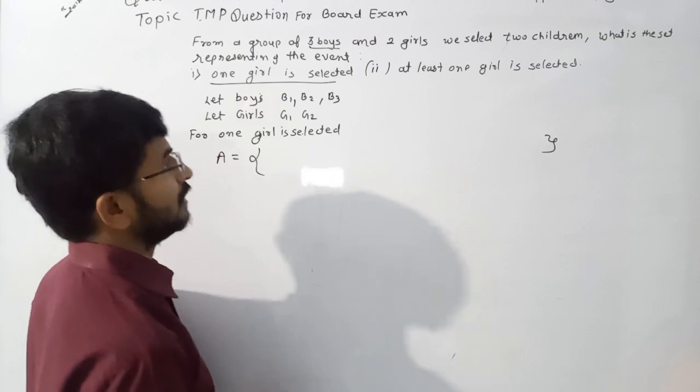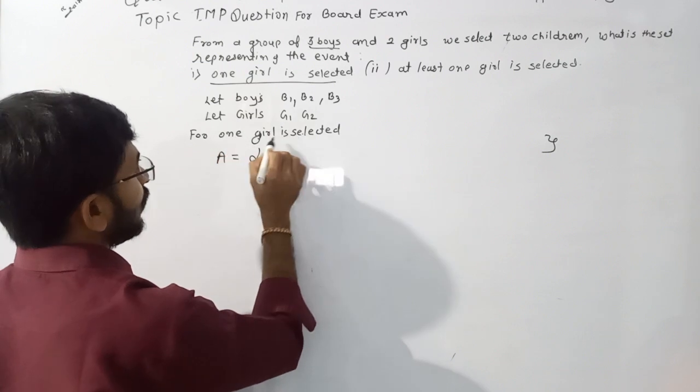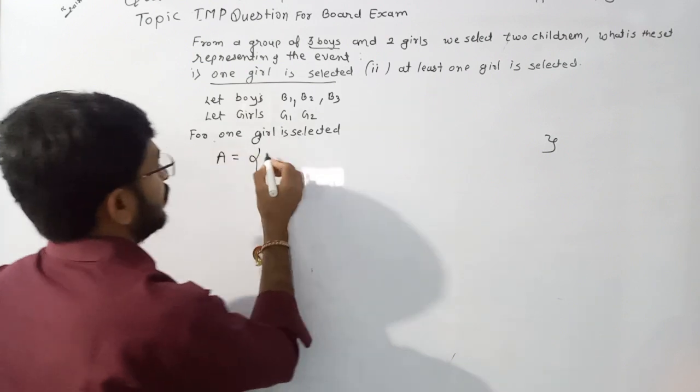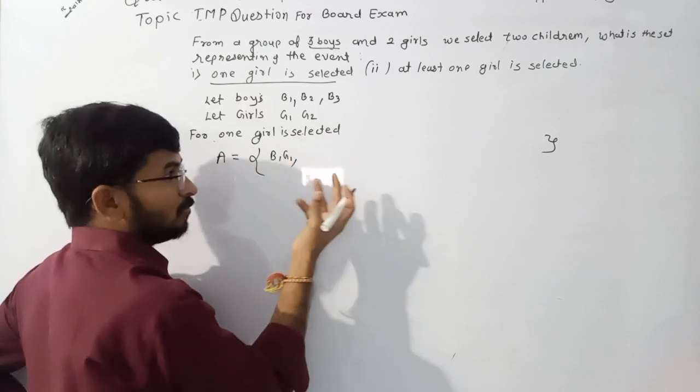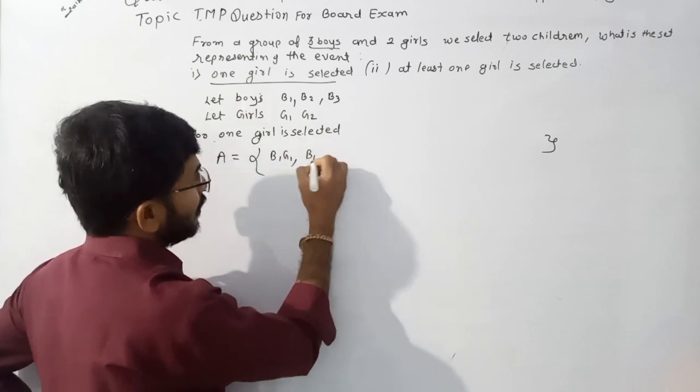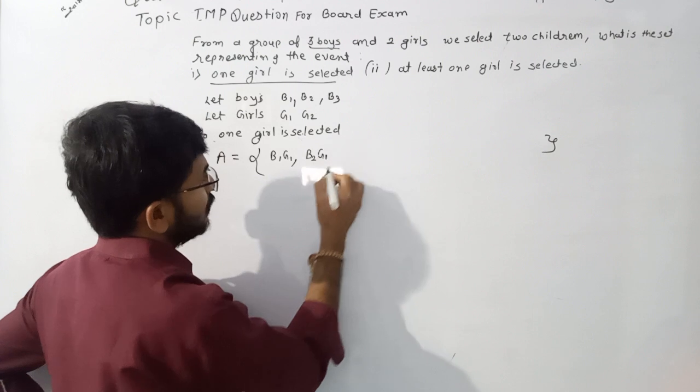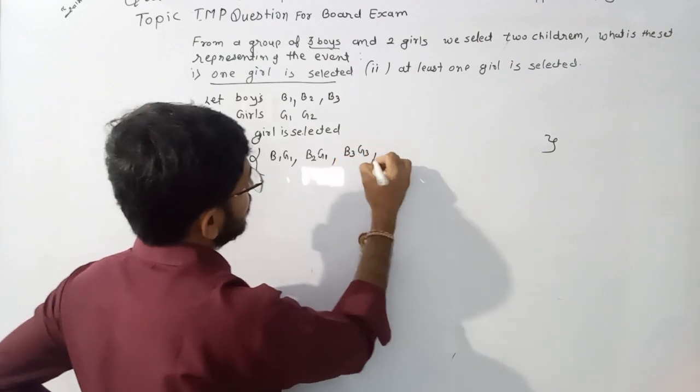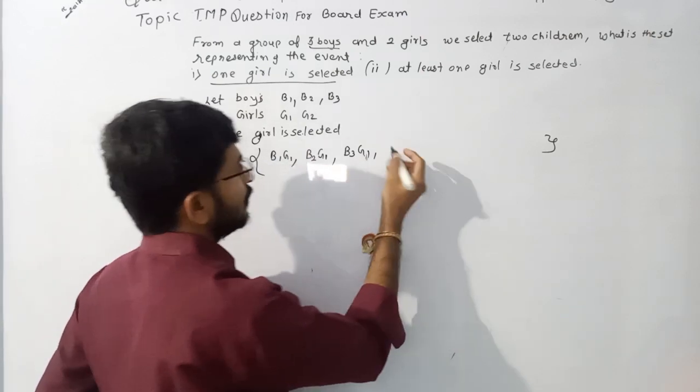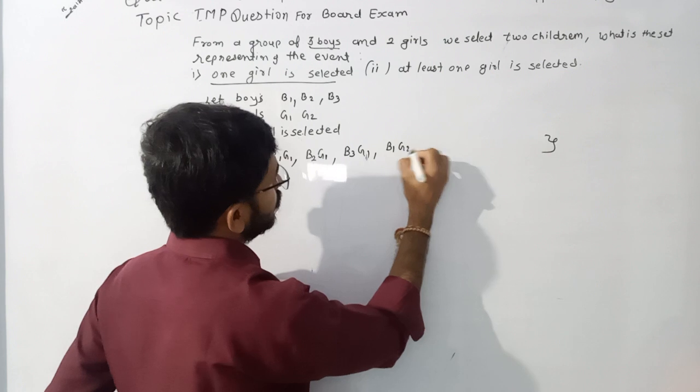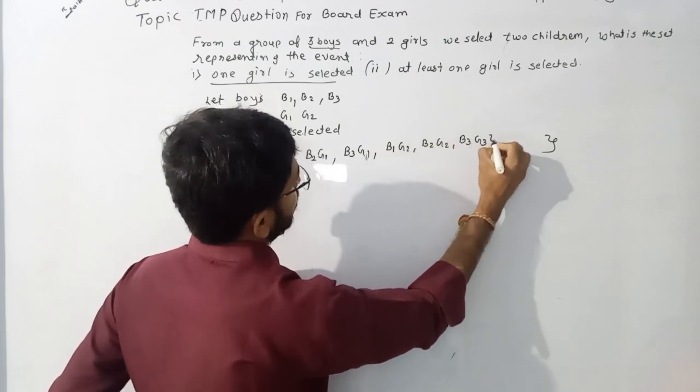Now we need to write the sample space in set form. Here are the options where one girl is selected: First, boys one and girls one (B1, G1). Boys two and girls one (B2, G1). Boys three and girls one (B3, G1). That's for girl one. And for girl two: boys one and girls two (B1, G2), boys two and girls two (B2, G2), boys three and girls two (B3, G2). This is the set form for the first question.